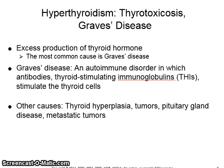Hyperthyroidism is also known as thyroid toxicosis or Graves disease. It results from an excess production of thyroid hormone. Graves disease is an autoimmune disorder in which antibodies — thyroid stimulating immunoglobulins — stimulate the thyroid cells. Other causes are thyroid hyperplasia, tumors, pituitary gland disease, and metastatic tumors.